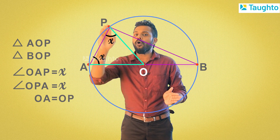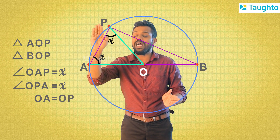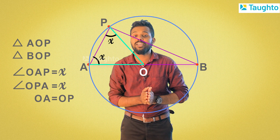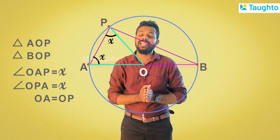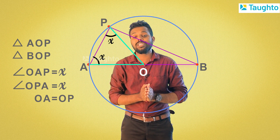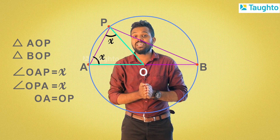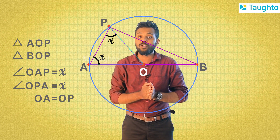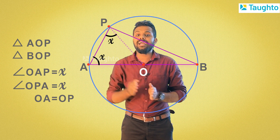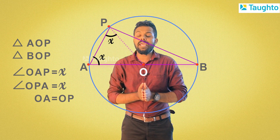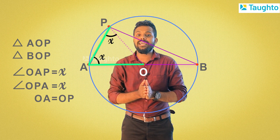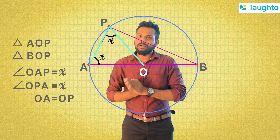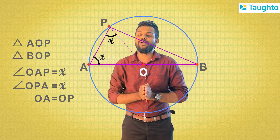OA is equal to OP. That's the same thing. This triangle is an isosceles triangle — the same triangle, the main sides are the same. Now let's say angle OAP equals x and angle OPA equals x.